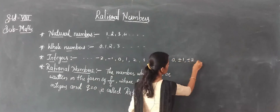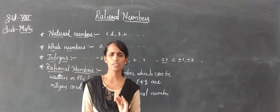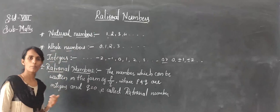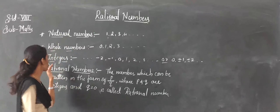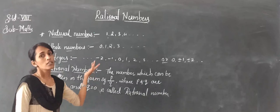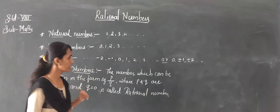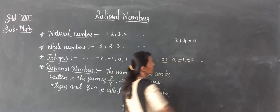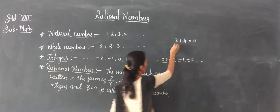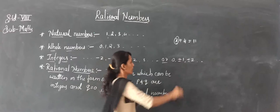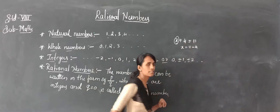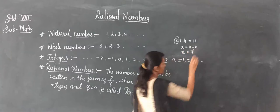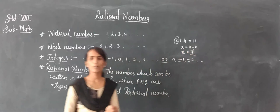So why do we need all these numbers? To solve any equation, we need all the numbers. Not only natural numbers, not only whole numbers, not only integers — each alone is not sufficient. For example, consider x plus 4 equals 11. To find x: x equals 11 minus 4, which gives x equals 7. So 7 is a whole number, a natural number, and also an integer.